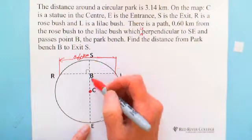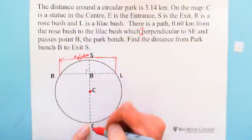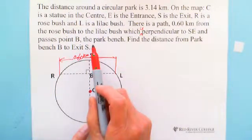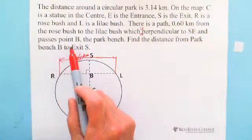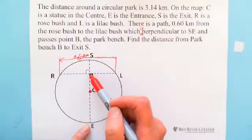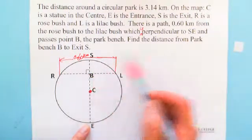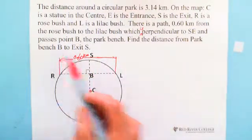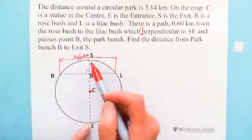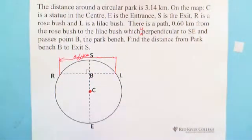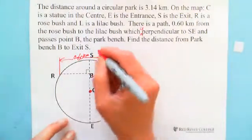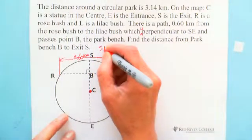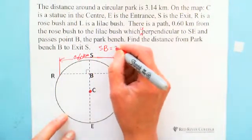The path RL is perpendicular to SE, where S is the exit and E is the entrance. Also, S, B, C, E are on the same line. B is the park bench. We need to find the distance from park bench B to exit S — we are looking for SB.